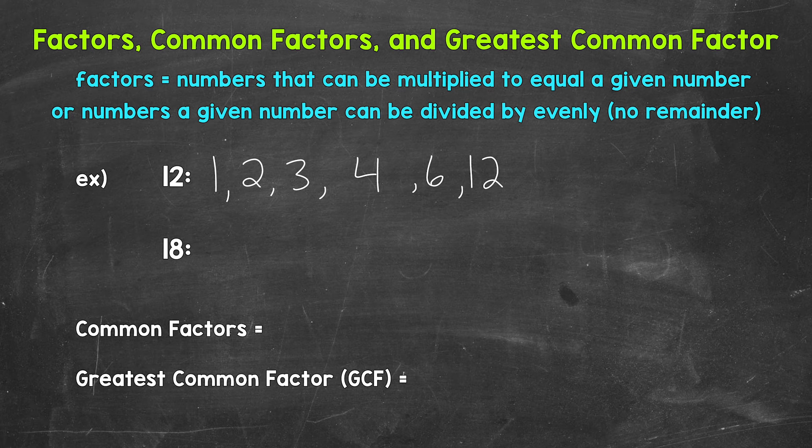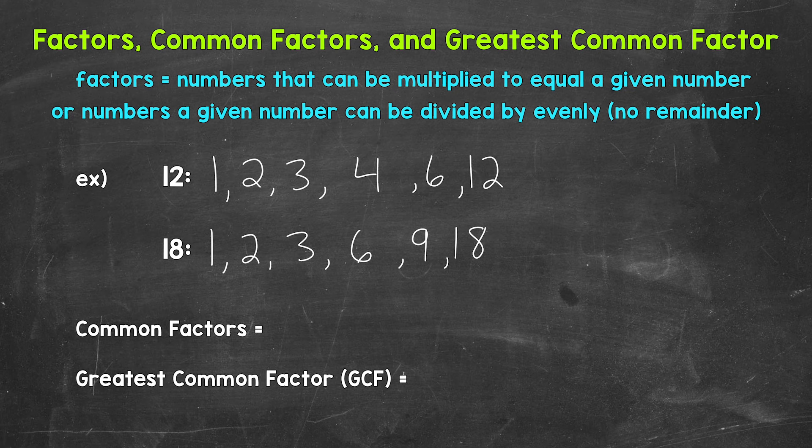We will start with 1 and 18, so 1 and 18 with a gap in between. Next we have 2 and 9. 2 times 9 equals 18, so 2 and 9 are factors. Then we have 3 and 6. 3 times 6 equals 18, so 3 and 6 are factors of 18. And that's it for the factors of 18.